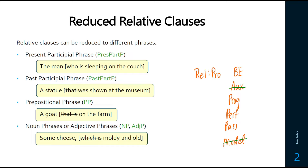So 'the man who is sleeping on the couch' — originally this would be a progressive, and we see the verb with the present participle -ing on it, so it reduces to what's called a present participle phrase. In the case of 'a statue that was shown,' we have a passive, so this reduces to a past participle phrase. 'A goat that is on the farm' reduces to a prepositional phrase. And 'some cheese which is moldy and old' or 'some cheese which is my favorite' reduce to adjective phrases or noun phrases, which have their own special functions.